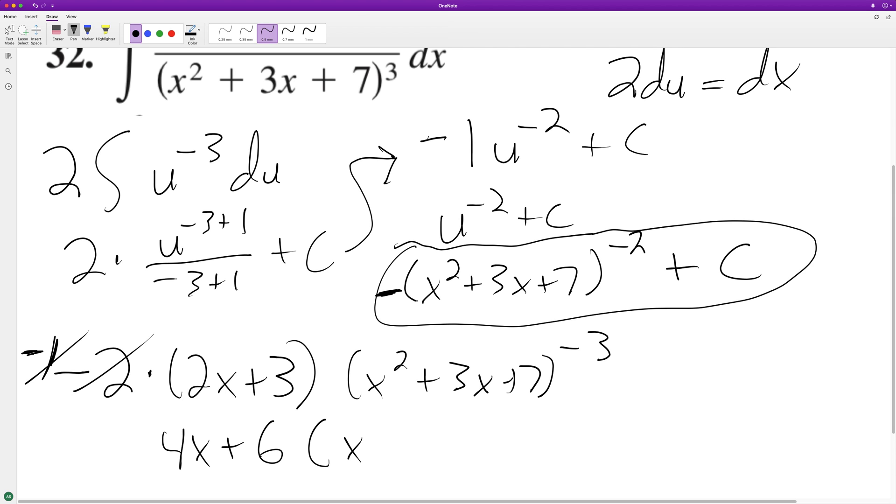And then we have our quantity x squared plus three x plus seven raised to the negative three. Sorry about that. So the only thing that was missing there is that negative out in front.